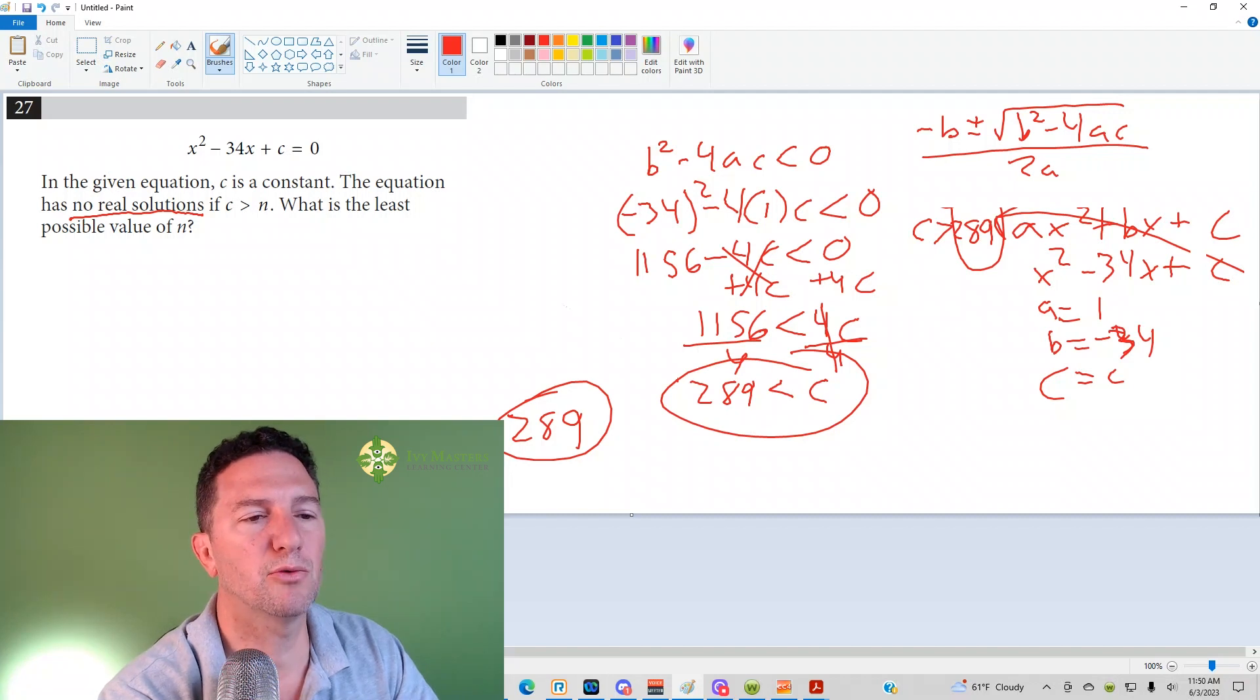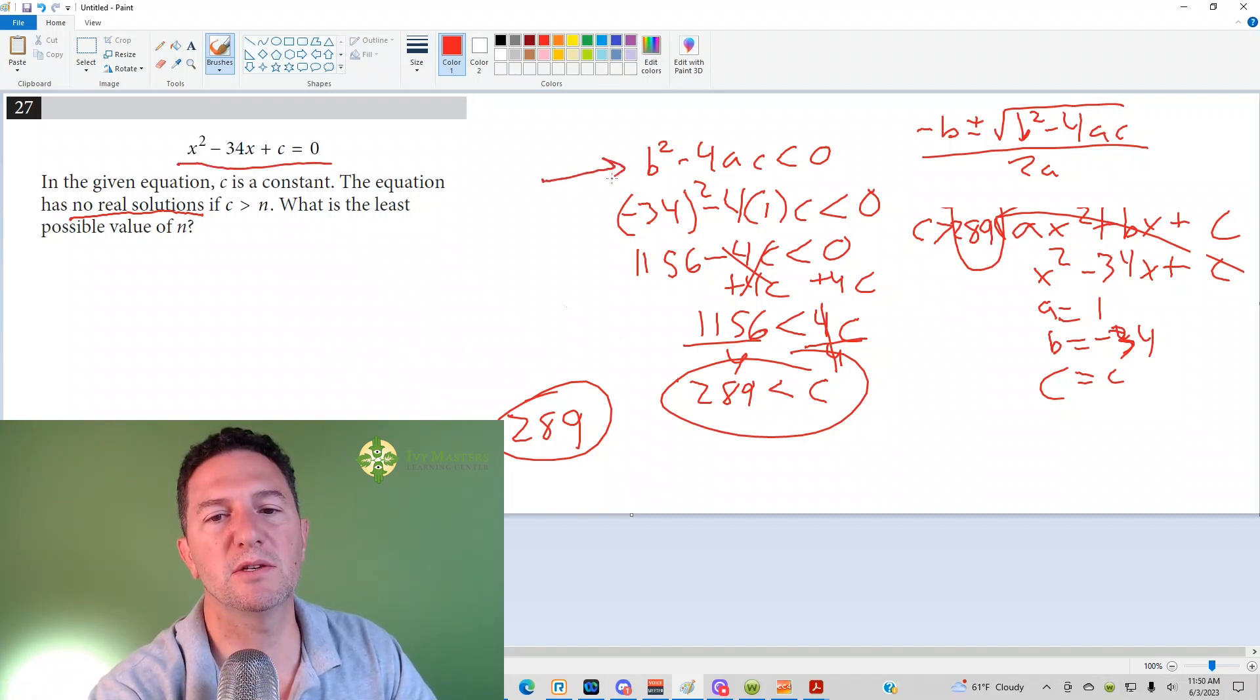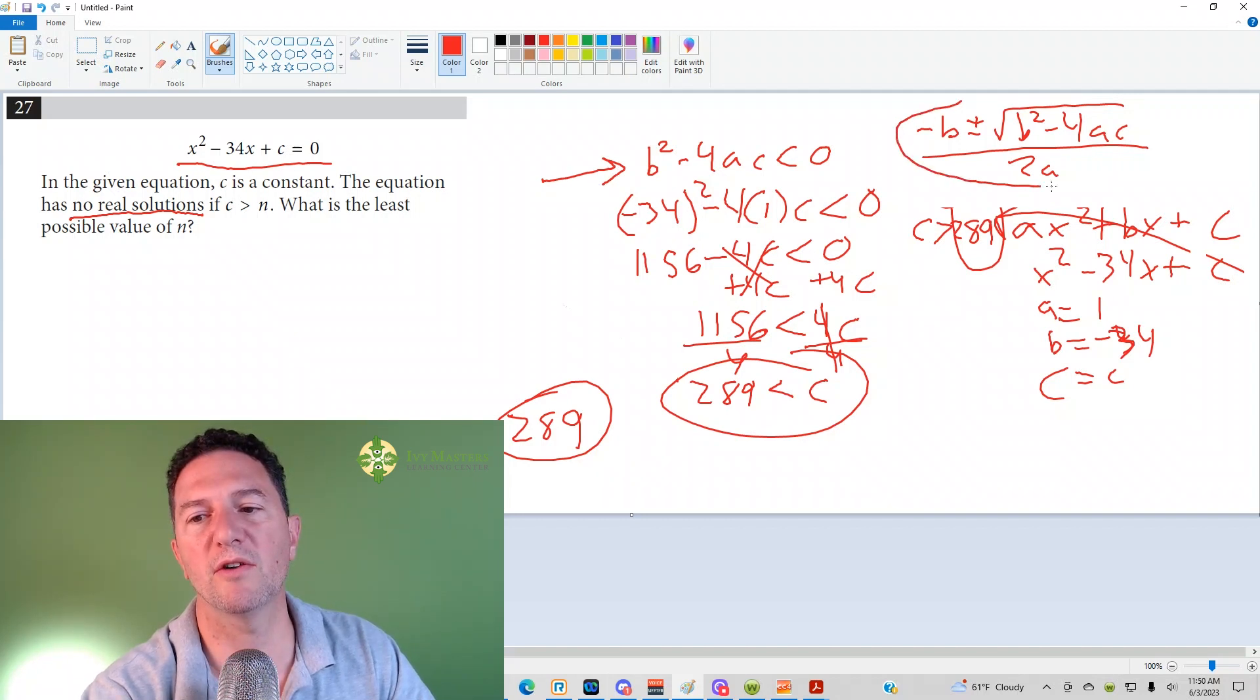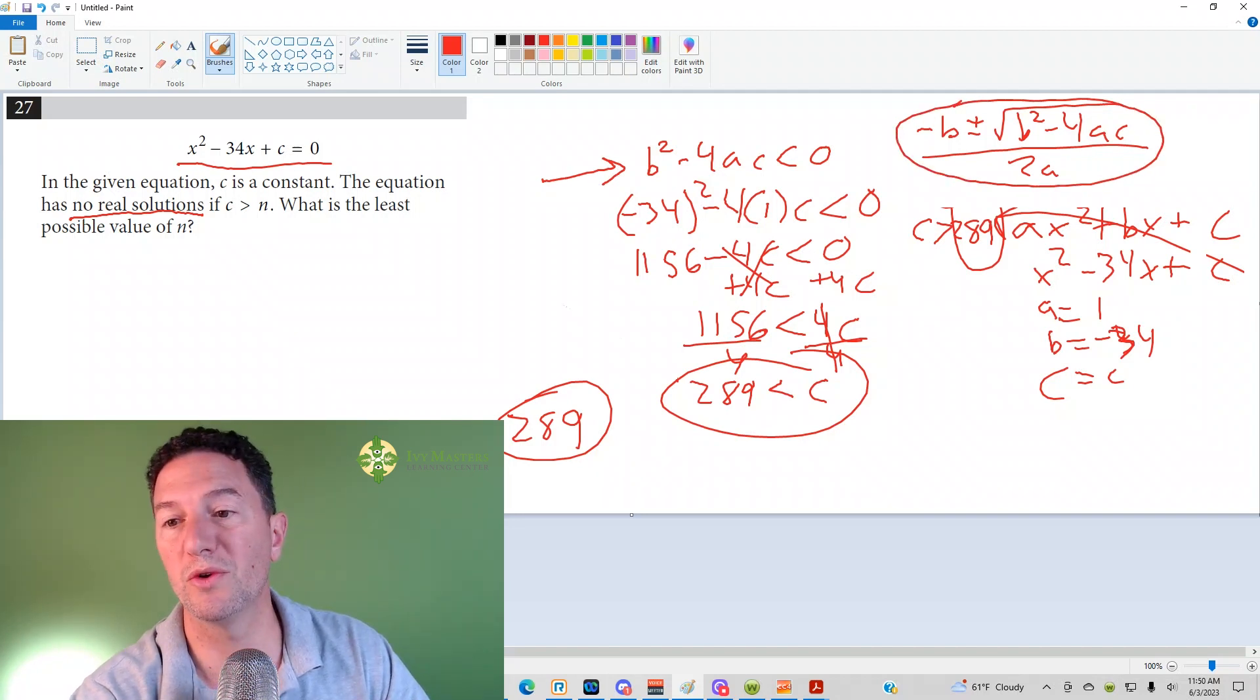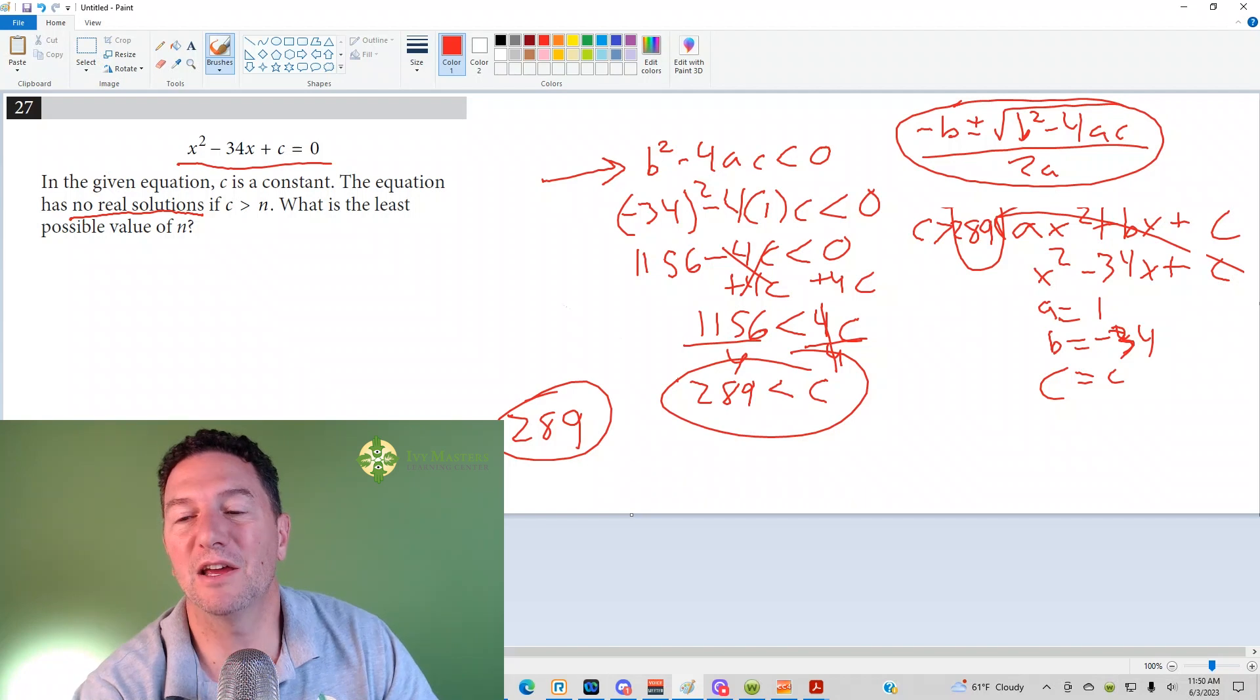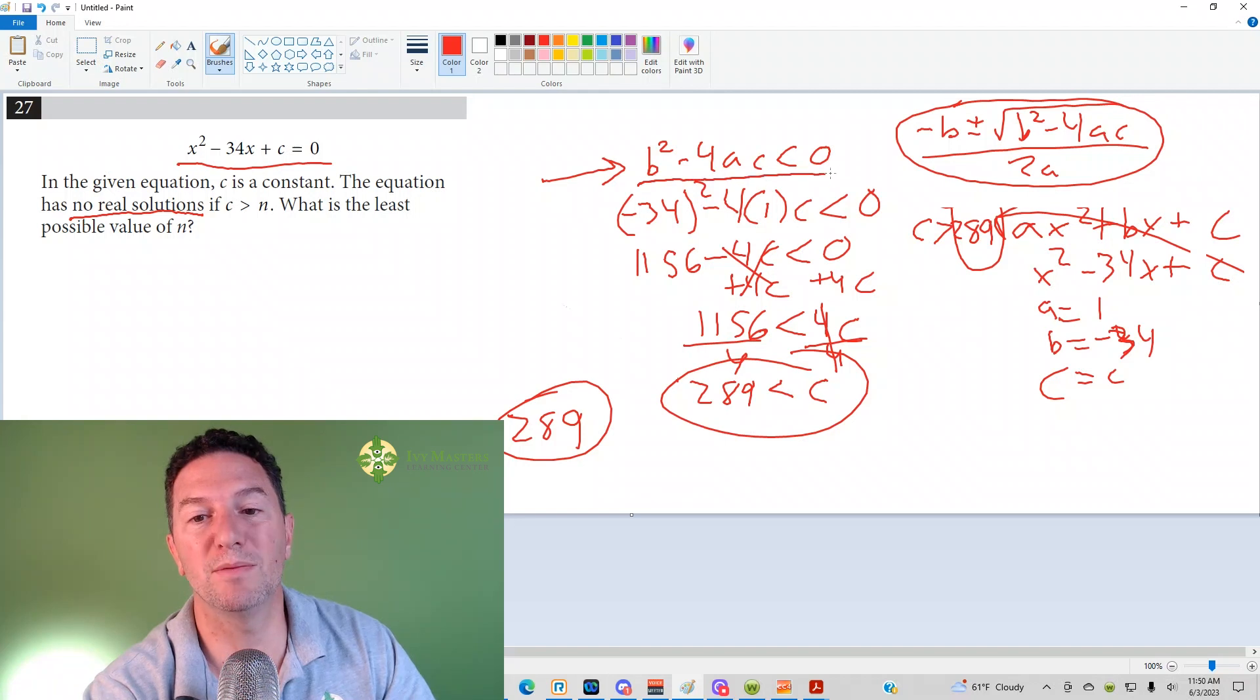Anytime it says no real solutions and you've got a quadratic, you've got x squared something, it's going to be b squared minus 4ac. We get that from the quadratic formula, and notice it's under the root. So if it's negative, square root of a negative is going to be imaginary, in other words no real solution. So we need b squared minus 4ac to be less than 0.